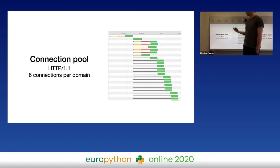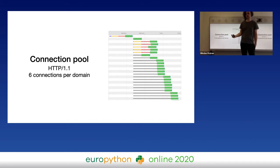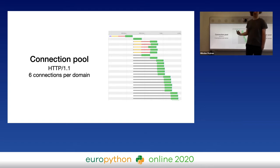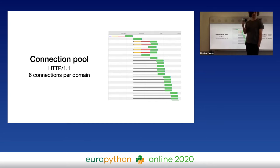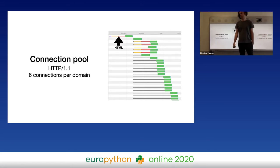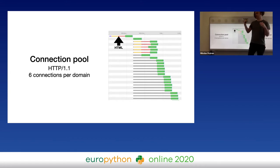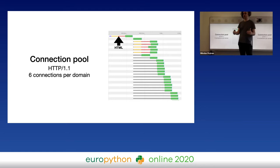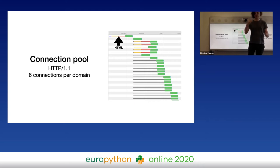With HTTP/1, browsers typically open multiple connections per server to allow at least some parallelism — in most cases, six connections per domain. A typical page today consists of hundreds of objects: images, JavaScript, styles, fonts, advertisement, tracking codes — whatever. So you have to load much more.